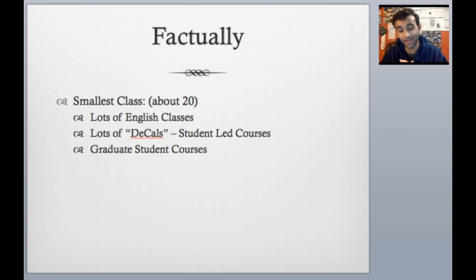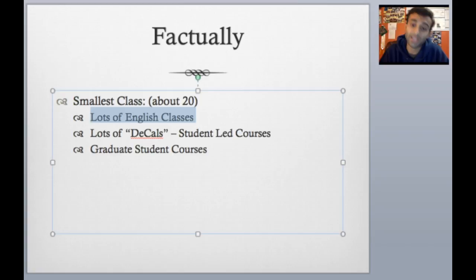The smallest class at UC Berkeley, there's actually a lot of them. Lots of English classes have about 20 students. Lots of DECALs, which are student-led courses at UC Berkeley, have 20 students. And lots of graduate student courses, because grad students don't take as many classes, tend to have about 20 students. So you'll find yourself definitely having classes that are small, but if you end up doing very broad, general overview classes like computer science, you will be in a room with way more people than you have ever seen in one place.